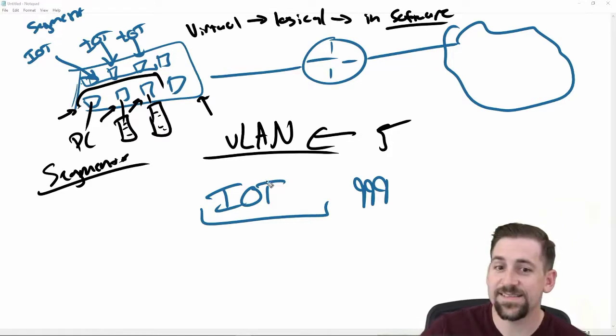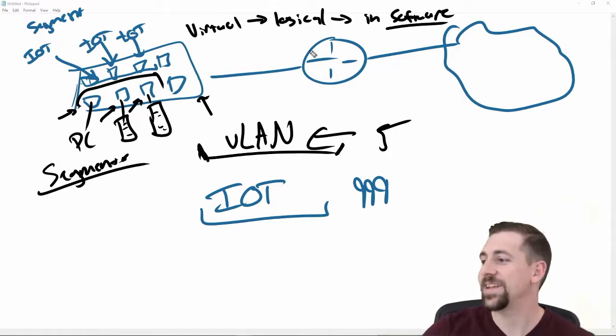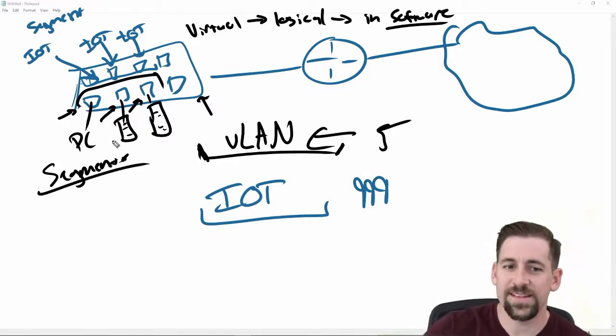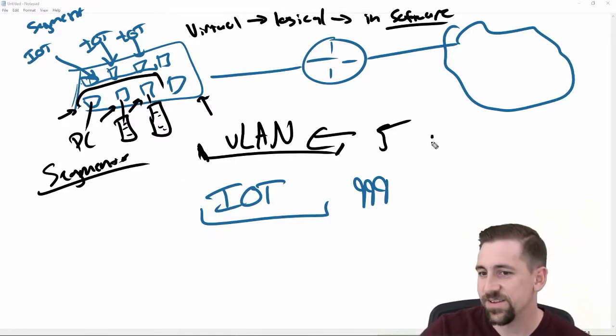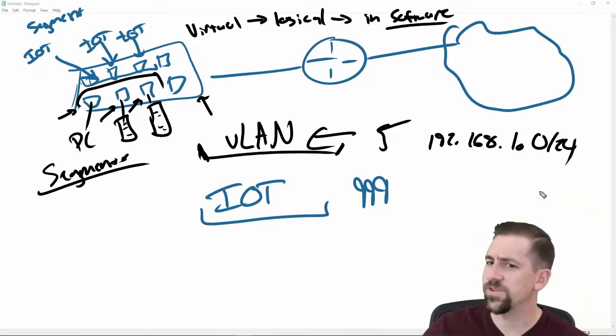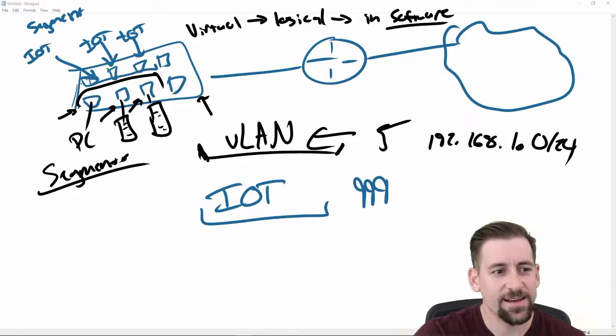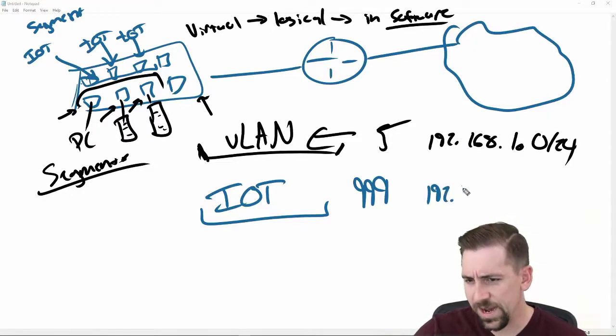And what this means is, they are essentially, this is essentially the same as segmenting them with a router. Where they have their own networks. So, that means that they would have their own IP address ranges. So, this could be the 192.168.1.0 address range. And this could be the 192.168.2.0/24.